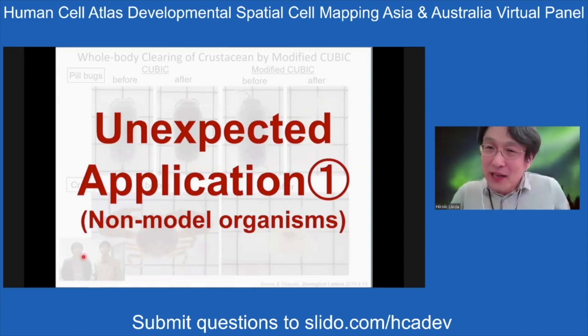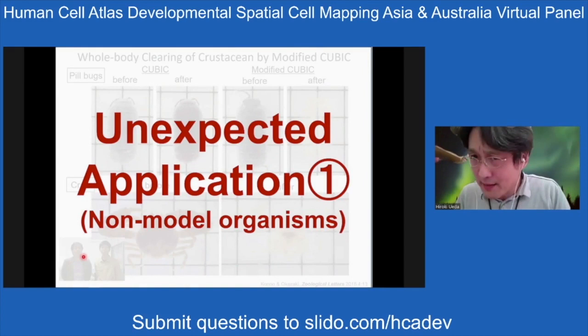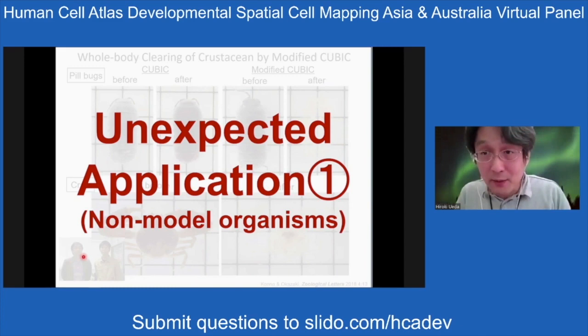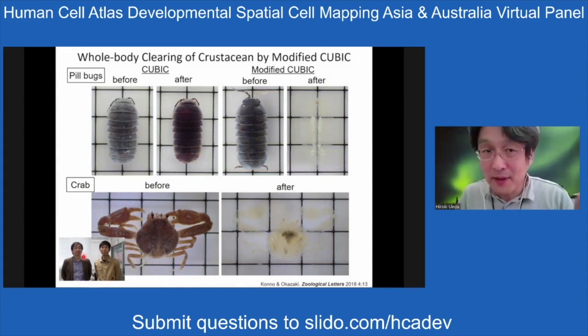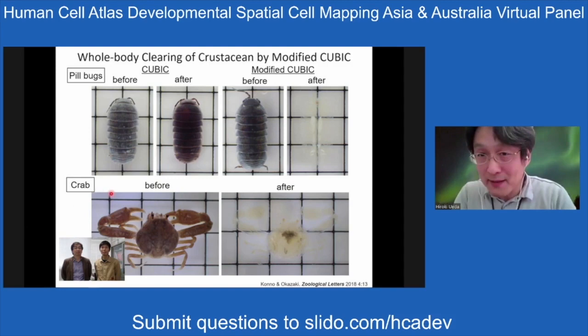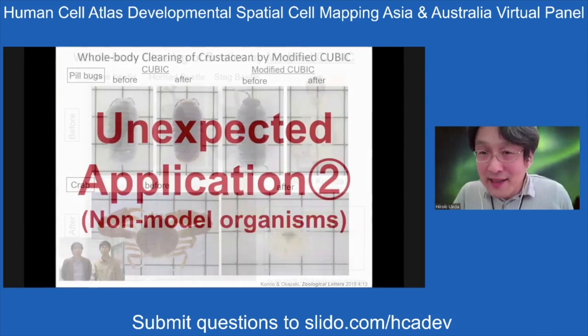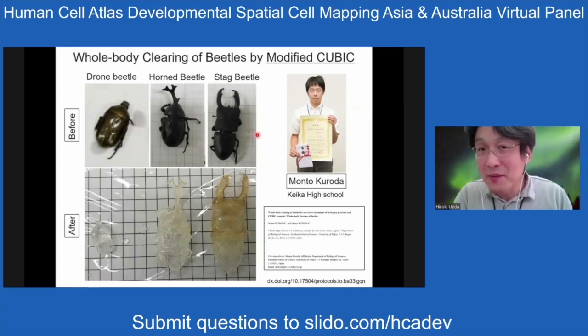After we published the paper, a tissue clearing chemical company started selling our reagents worldwide. There have been many unexpected applications — some researchers in Japan applied our technology to pill bugs to make them transparent, and also made a transparent crab. High school students applied our technique to drone beetles, horn beetles, and stag beetles to make transparent insects. Using this technique, you can analyze every single cell existing in these beetles.